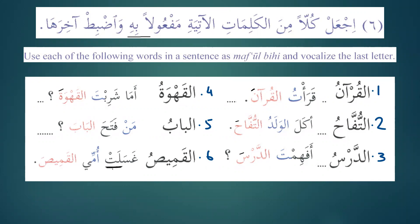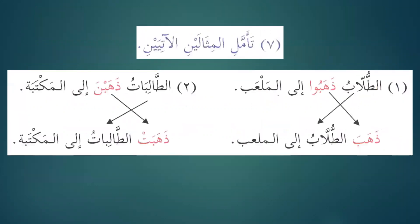Now it's up to you to practice. The more you practice, inshallah, the more you will learn the verbs and the Arabic language. Ta'ammali al-mithalayni al-atiyayni — reflect on the following two examples. Ta'ammal is fil al-amr again, and whenever we have fil al-amr the noun that comes after it will always be mansoob.